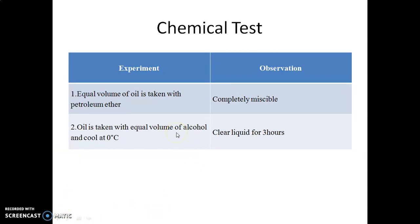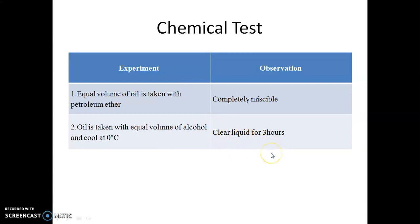Let's see the chemical tests for castor oil. Castor oil purity is checked by its physical properties as well as by chemical tests. Equal volumes of oil and petroleum ether are taken — castor oil is completely miscible with petroleum ether. Also, when oil is taken with an equal volume of alcohol and cooled at 0 degrees Celsius, it produces a clear liquid that remains stable for 3 hours.